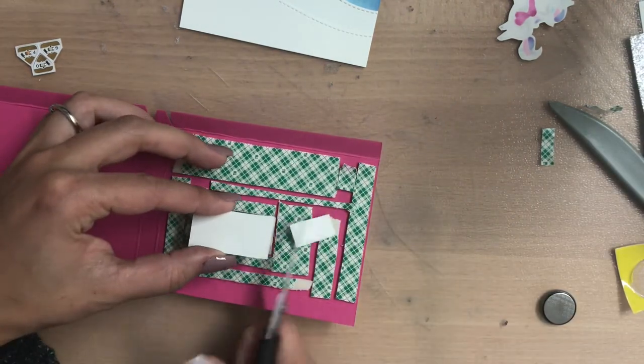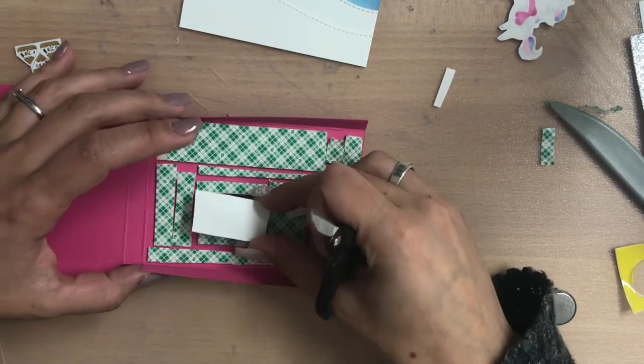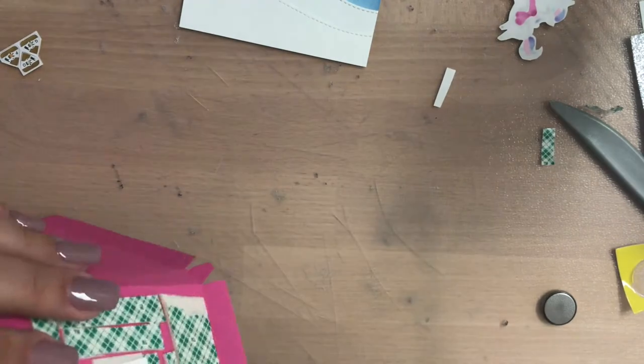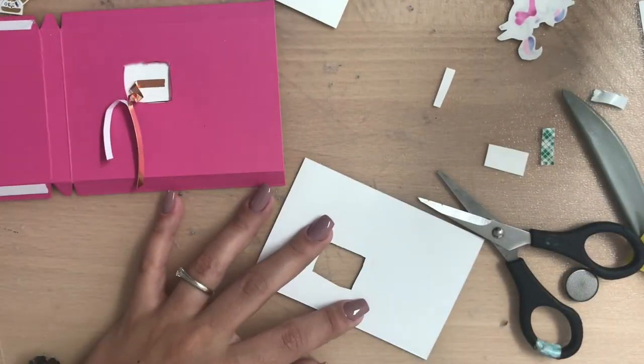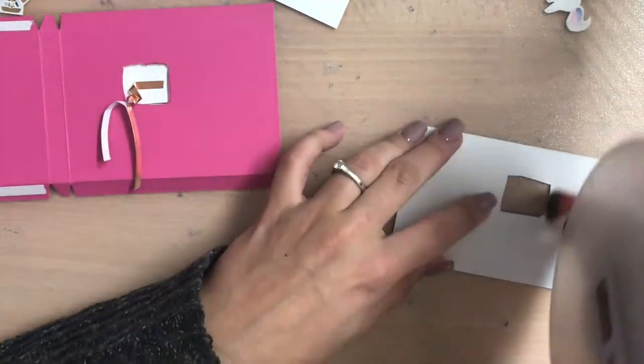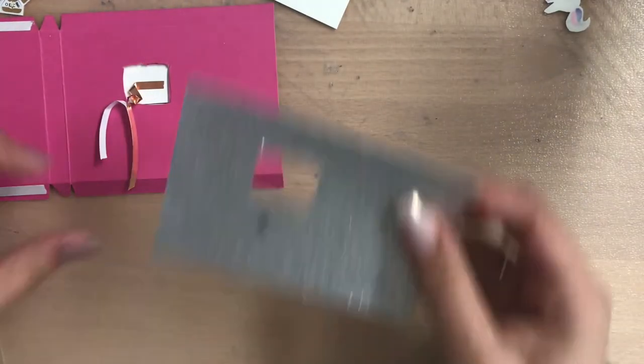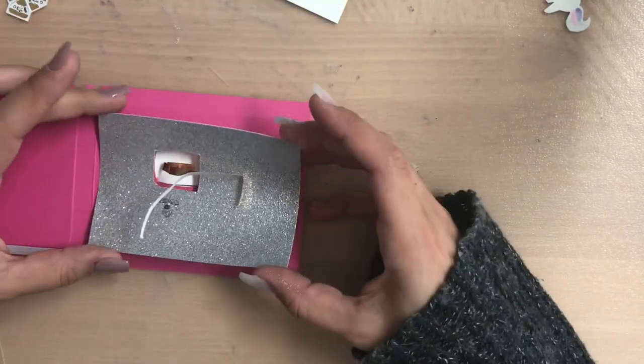I'm sorry I already started by taping my copper tape down and then I realized I wanted to do it like this, but you can see now what I did. I taped it from behind this thickness thing. Now I'm taping down my glitter paper on top.